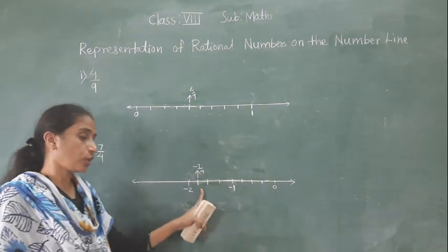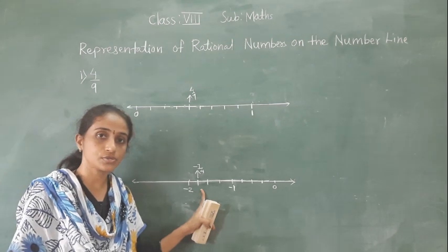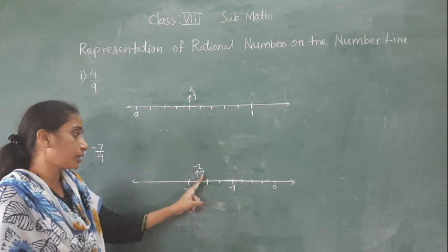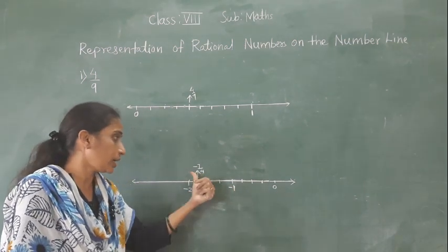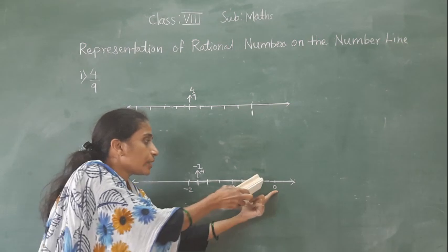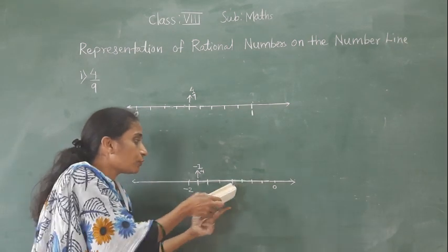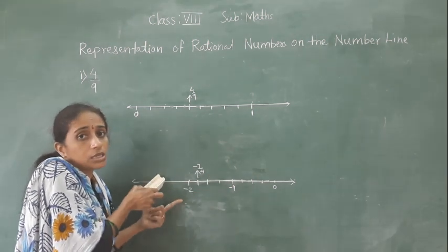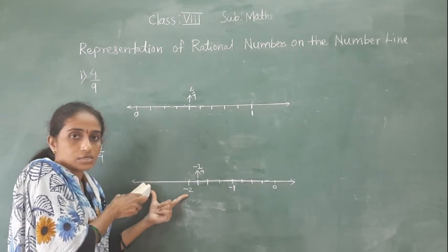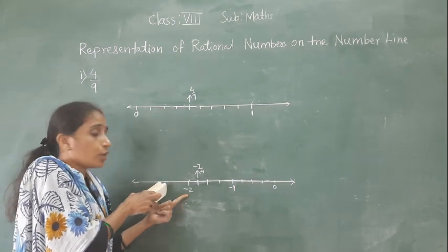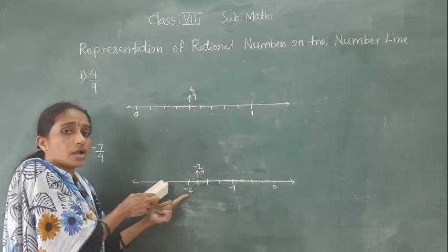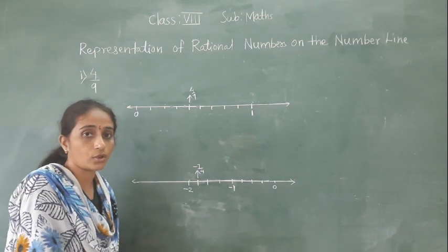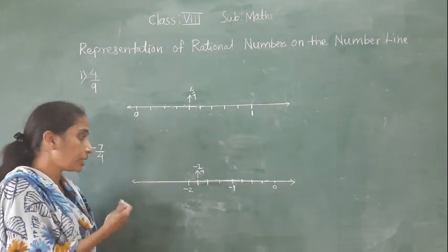So how do we represent a rational number on the number line? We just look at the denominator. From 0 to the nearest integer — here from 0 to minus 1 — we make 4 equal parts. Then from minus 1 to minus 2, again 4 equal parts. The denominator tells us how many equal parts to make between each pair of integers.